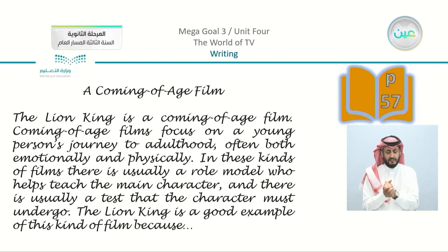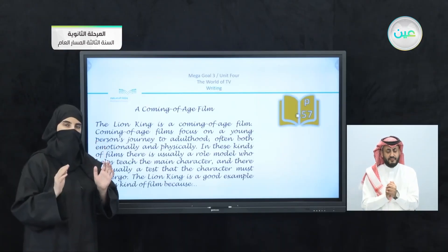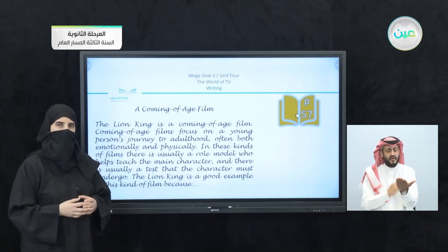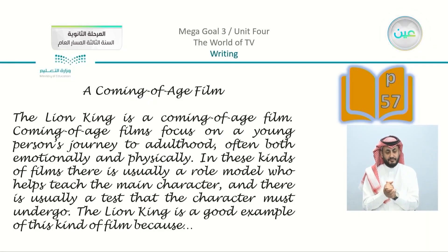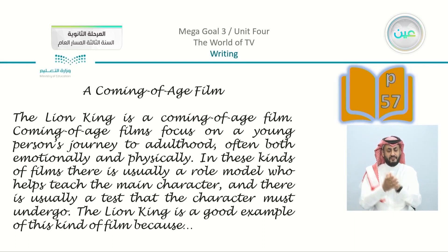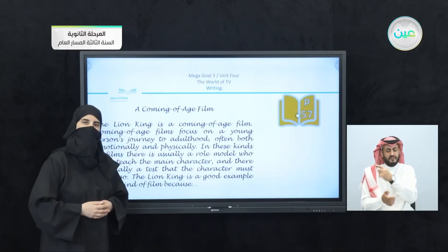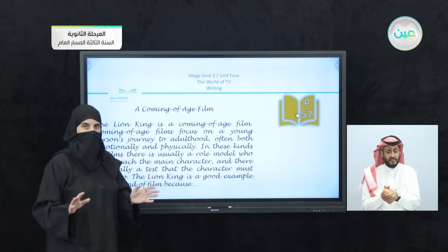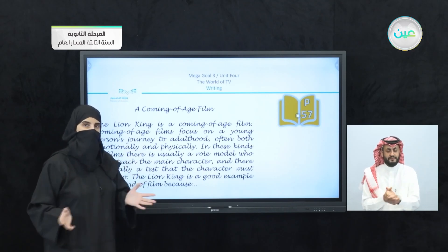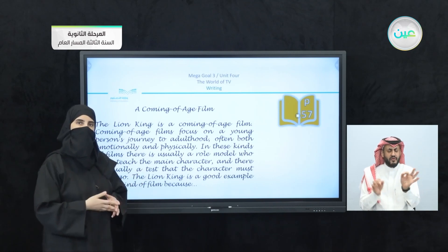On page number 57 in your book, there is a paragraph that is an example of how you are going to write your essay. Let's read it together: 'A Coming-of-Age Film. The Lion King is a coming-of-age film. Coming-of-age films focus on a young person's journey to adulthood, often both emotionally and physically. In these kinds of films, there is usually a role model who helps teach the main character, and there is usually a test that the character must undergo. The Lion King is a good example of this kind of film because...' — and it's left for completing. The example in the book is not complete, so we are going to work together to give a complete essay and learn how to write the details in your chart.